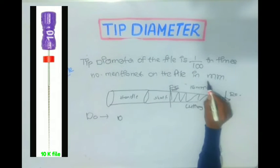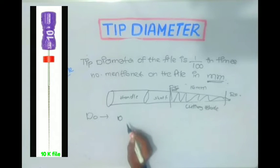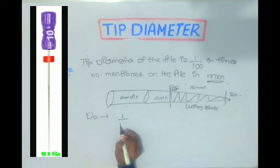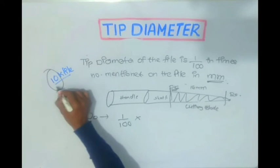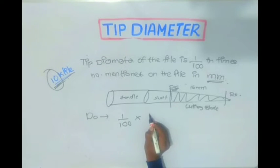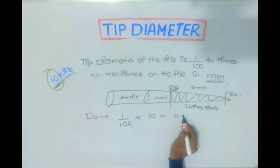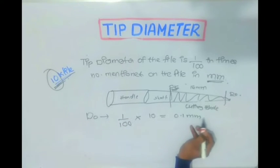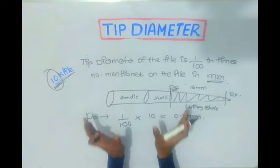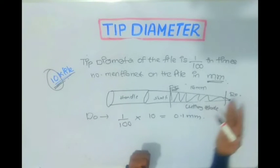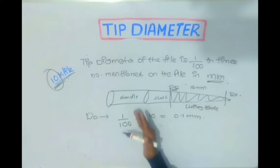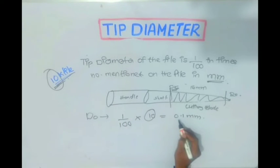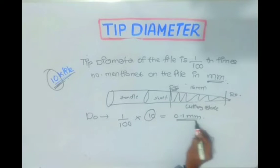So for a 10 number K-file, the tip diameter D0 is 1/100 × 10, that is 0.1 mm. When I say a 10 number K-file, it represents that the tip diameter of the file is 1/100th times the number mentioned on the file, that is 0.1 mm.